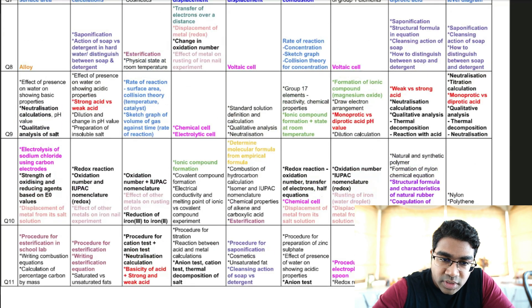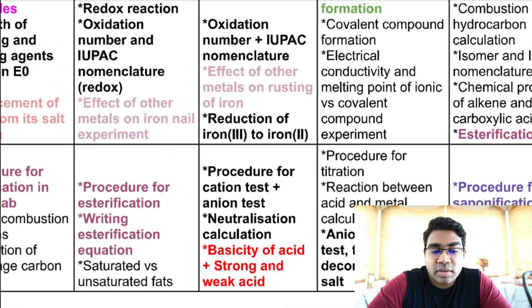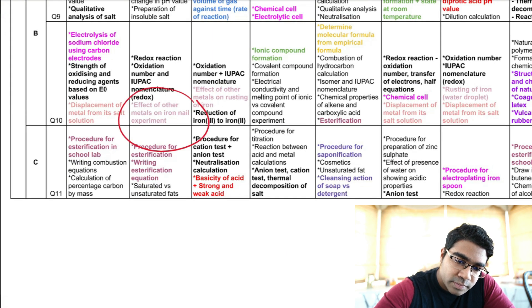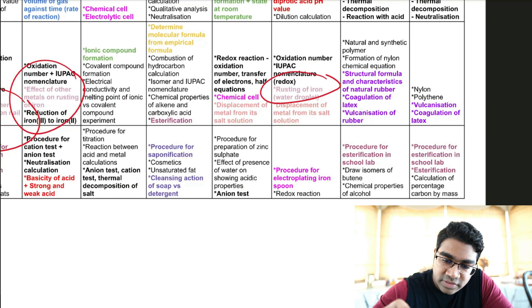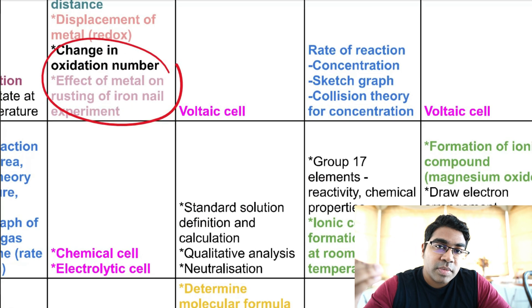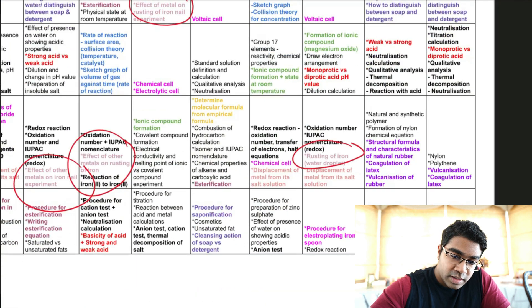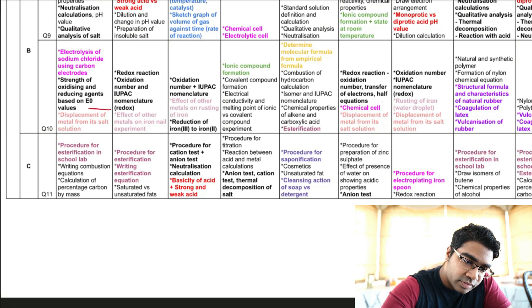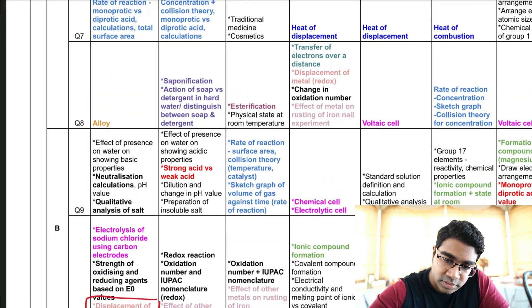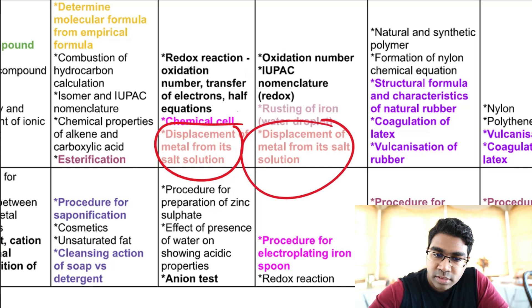In Section B, there are quite a few experiments on displacement of metal. This includes the experiment on the effect of other metals on iron nails — the experiment where you wrap the iron nail with two different types of metal, one more electropositive and one less electropositive. Rusting of iron and the effect of metal on rusting of the iron nail has come out in several states. Displacement of metal from its salt solution, which is all under redox equilibrium, also keeps recurring mostly in Section B.